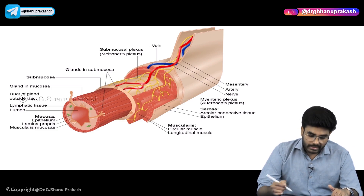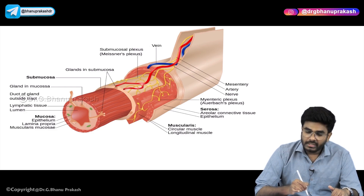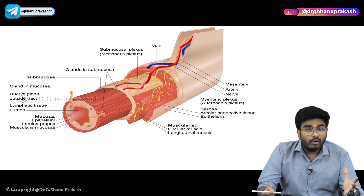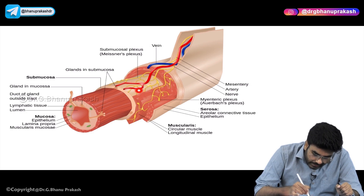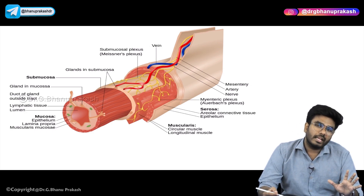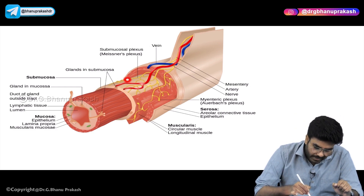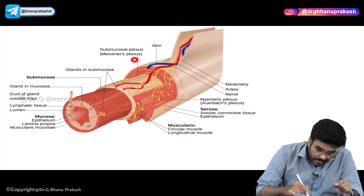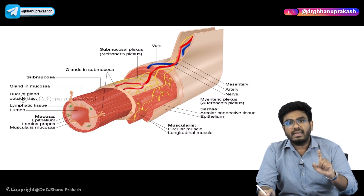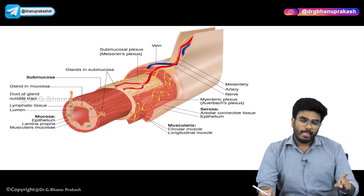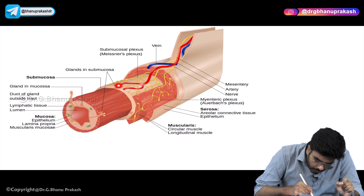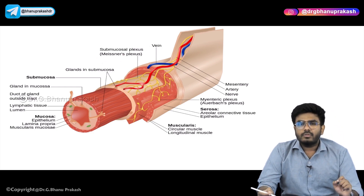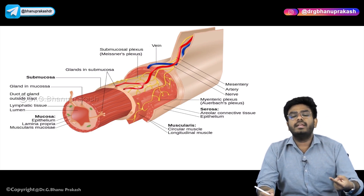In the muscularis region as well as in the submucosal region, there are nerve plexuses — visible as a yellow color network. There is a plexus present in the submucosa called the submucosal plexus or Meissner's plexus. Meissner's plexus innervates the glands in the submucosa, helping in GI secretions by stimulating those glands.